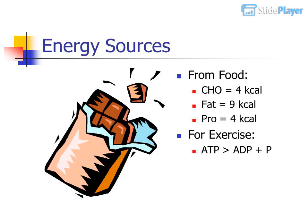Energy sources from food for exercise: carbohydrates (CHO) equal 4 kilocalories, fat equals 9 kilocalories, and protein (PRO) equals 4 kilocalories.